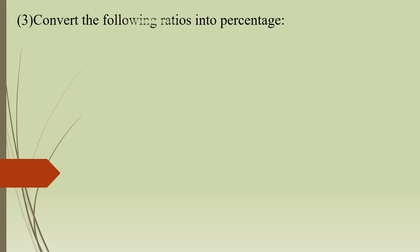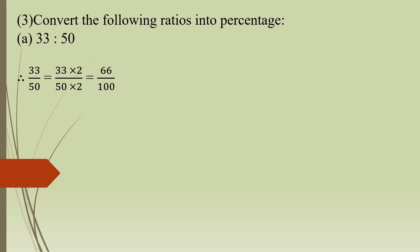Now we will move to the next question: convert the following ratios into percentage. For percentage, the denominator should be 100. The first ratio is 33 is to 50, written as 33 upon 50. To make the denominator 100, multiply 50 by 2 to get 100, and multiply the numerator by the same: 33 into 2 equals 66. So 66 upon 100, which means the percentage is 66%.